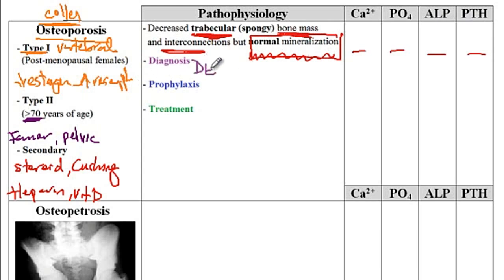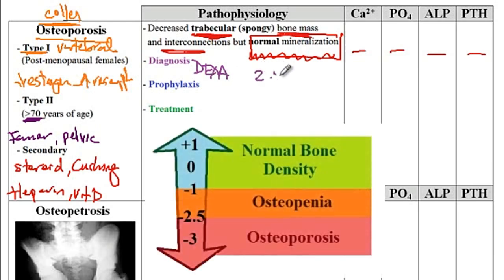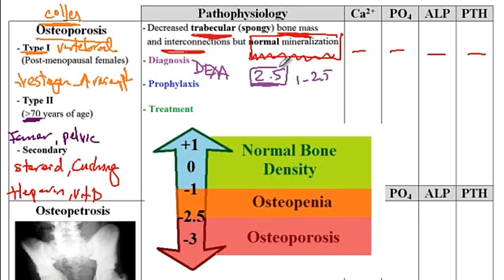For diagnosis, you can order a DEXA scan. You take a bone sample from the hip and compare it to the bone density of a healthy 30-year-old individual. If there is more than 2.5 standard deviations less in the level of bone mass, that is a diagnosis of osteoporosis. If there is about 1 to 2.5 standard deviations less in bone mass, that would be osteopenia.